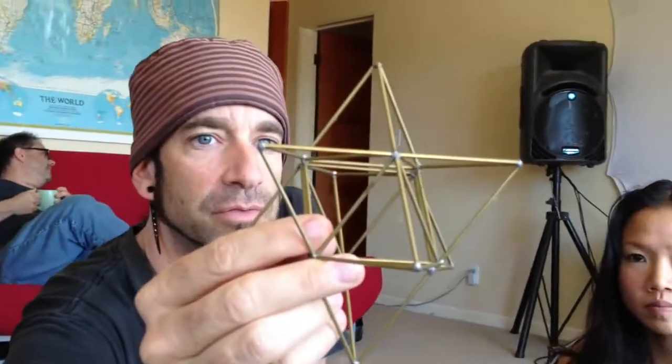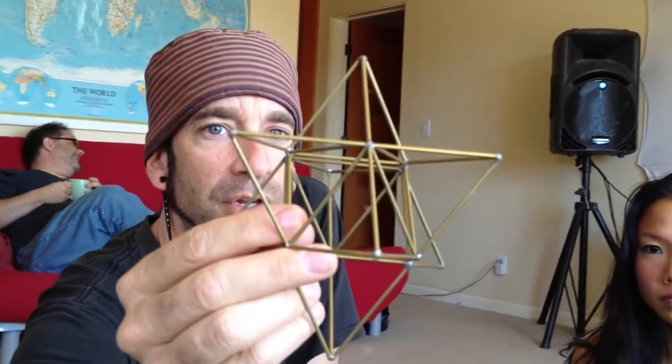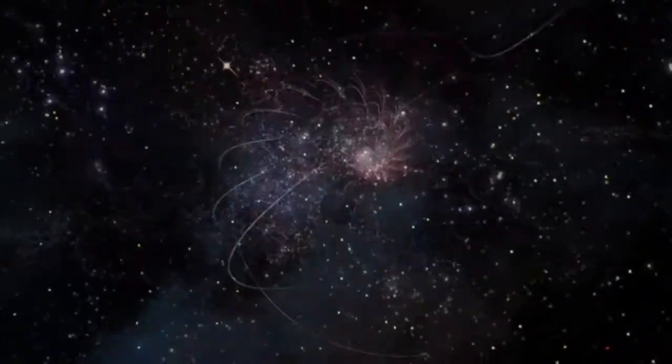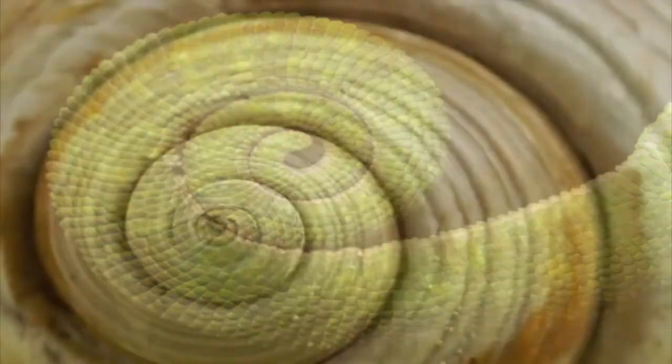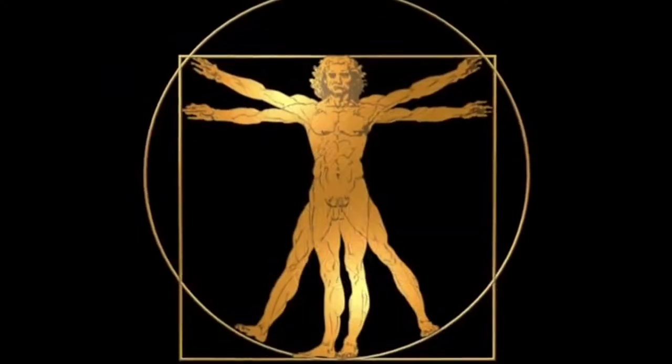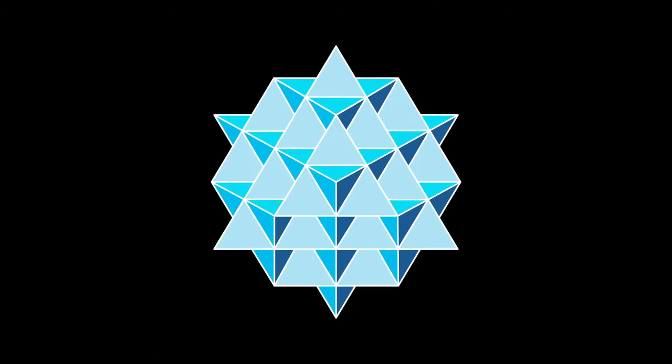Its opposite is the star tetrahedron—the inward and the outward flow of energy from the center. When we begin to look at the relationship between the data points in the vacuum, we see that they equate the phi ratio over and over and over. This is the pattern we come up with, which Nassim has called the 64 tetrahedron grid.